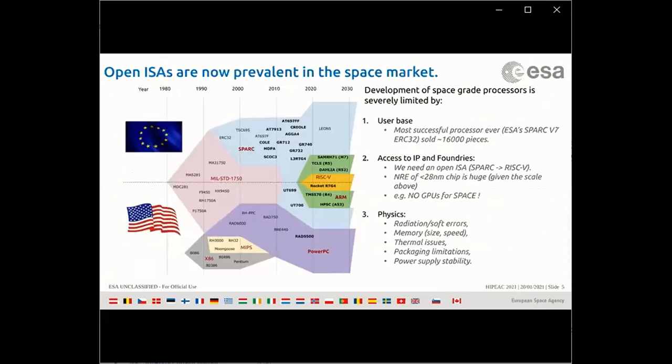We cannot afford this in space — we cannot afford to be linked to one vendor only despite performance considerations. The result is that open ISA is now prevalent in the space market. The state of the art in 2020 shows that the European market is dominated by SPARC, with several system-on-chip products on the market. ARM is also picking up in space, mostly embedded in larger SoCs or in microcontrollers coming from the automotive market.